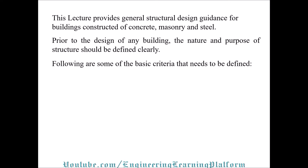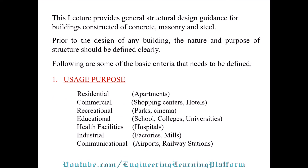The first basic criterion is usage and purpose. Categories include residential — apartments; commercial — shopping centers, hotels, recreational parks, cinemas, hostels; educational — schools, colleges, universities; health facilities — hospitals, clinics; and industrial buildings such as factories or mills.